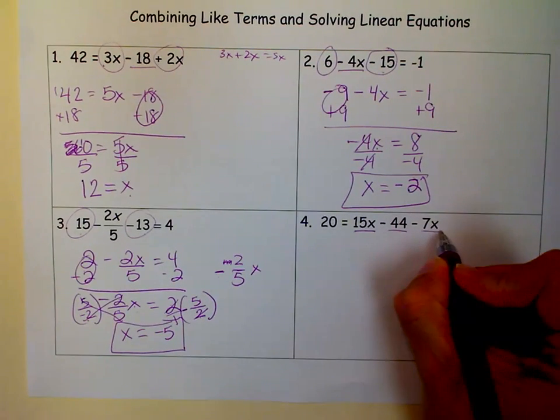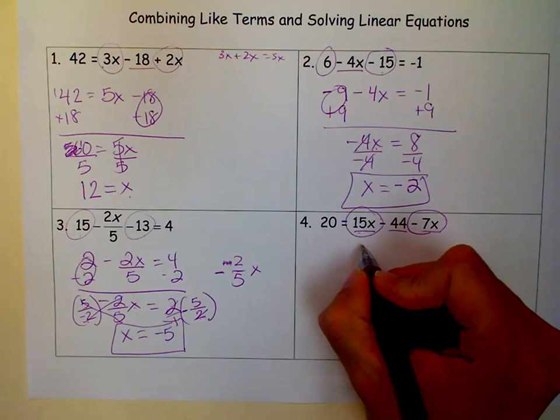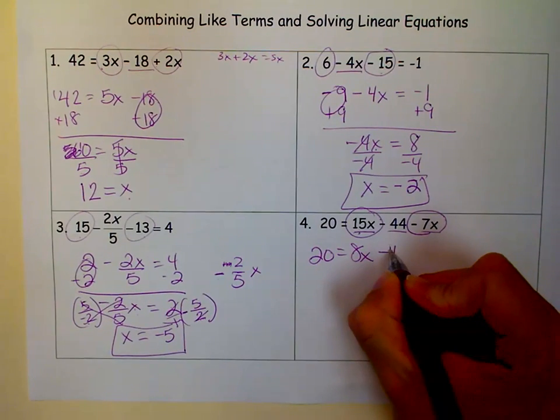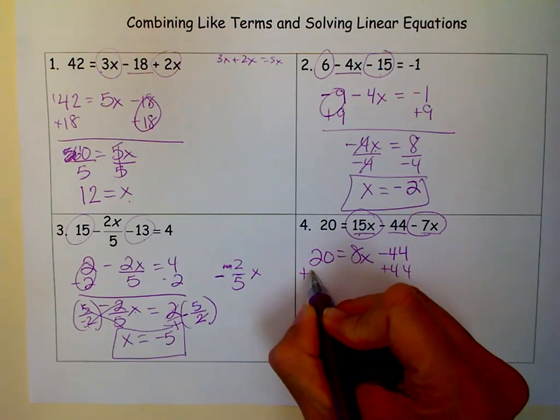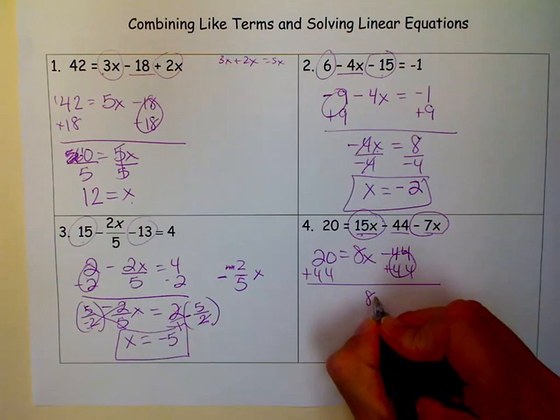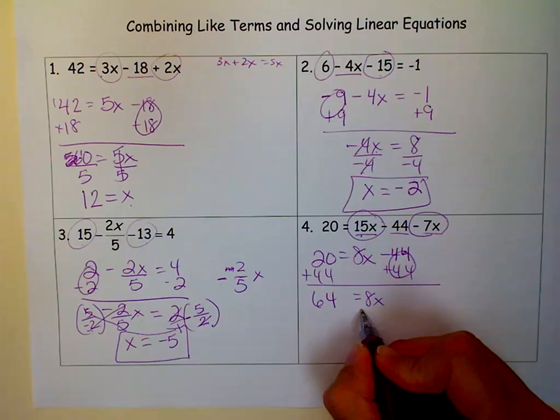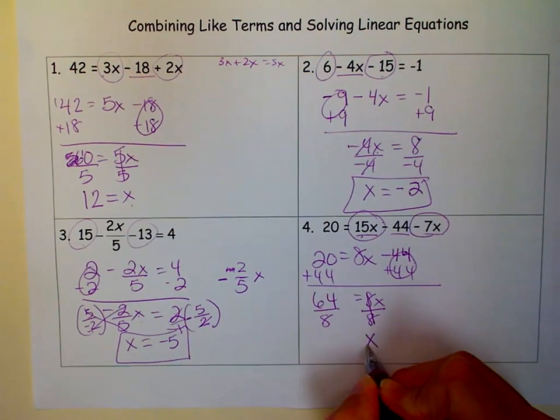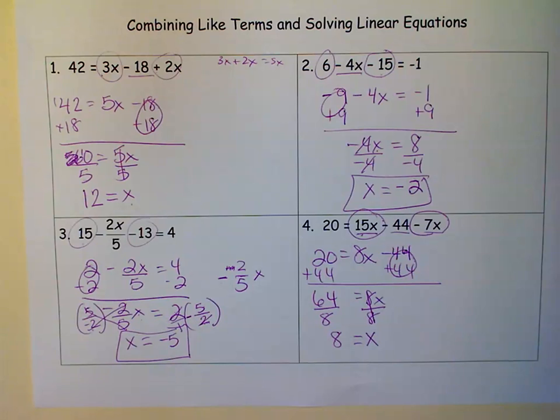x term, constant term, x term, x terms get combined. So 15 minus 7, 15x minus 7x is 8x. The 20 comes down. Minus 44. Now it's a two-step equation. So I want to get rid of the constant term first, so I add 44 to both sides. Cancels out there. 0 and 8x plus 0 is just 8x. And over here, I get 64. To get rid of my coefficient of 8, I'm going to divide both sides by 8. 8 divided by 8 is 1, so I get 1x. And 64 divided by 8 is 8. And like I said, you can check that one on your own.